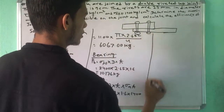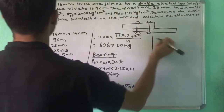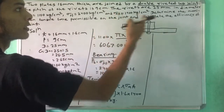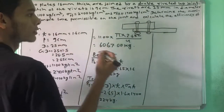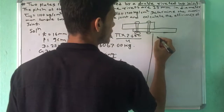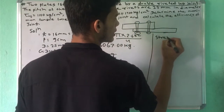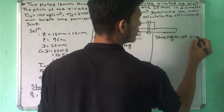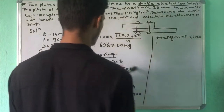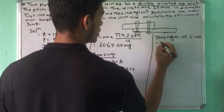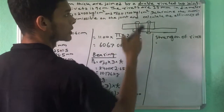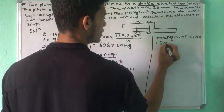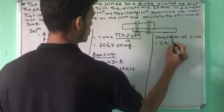Now determine the maximum tensile force — yes, it's the strength of the riveting. This is for a double riveted lap joint. The maximum tensile portion gives us the strength.